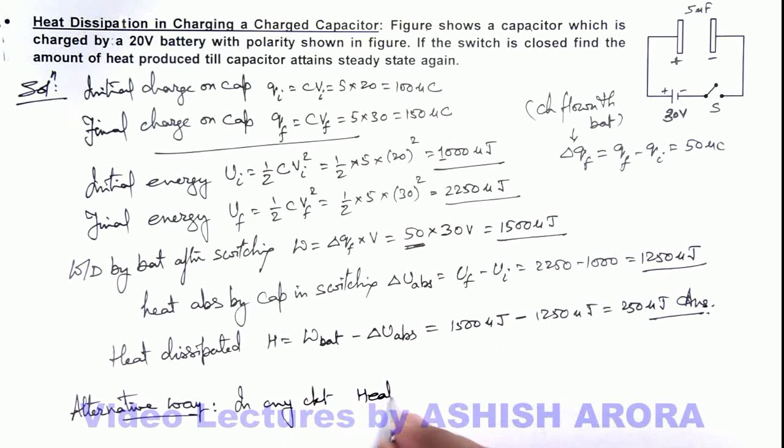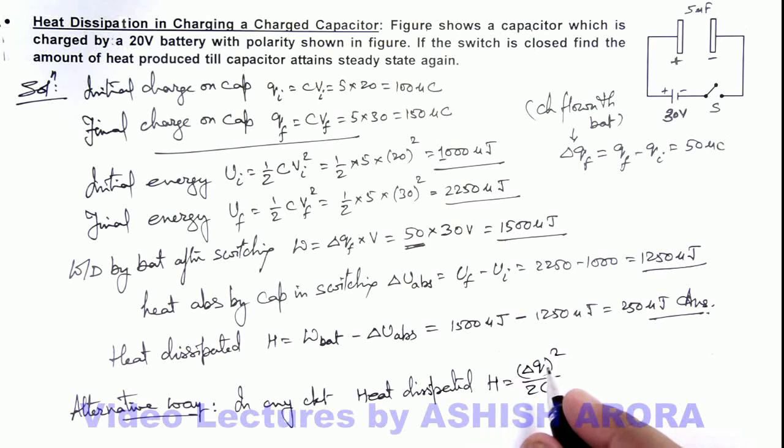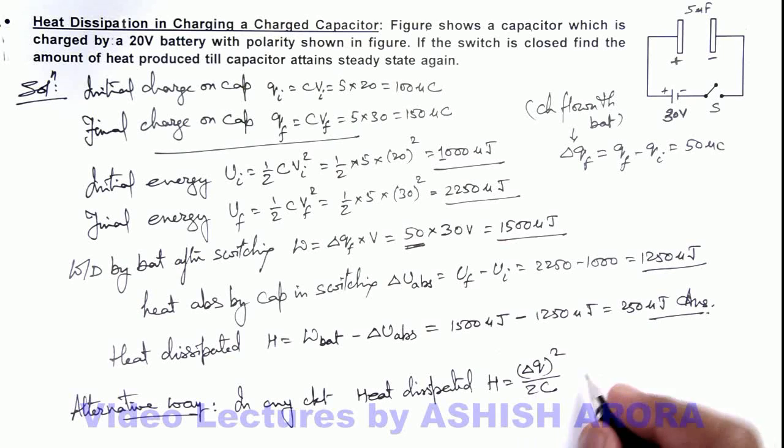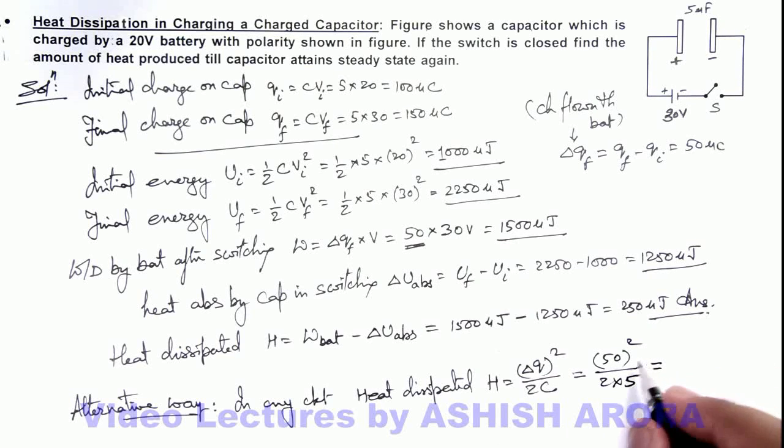Heat dissipated can be directly given as (ΔQ)²/2C, where ΔQ is the summation of all the capacitor changes in the circuit. Here you must be very careful that ΔQ for an individual capacitor may be different. And here if we substitute the value of ΔQ, this is given as 50² divided by 2 × 5. So this will be 2500 by 10, this is 250 microjoule, and that is the answer to this problem.